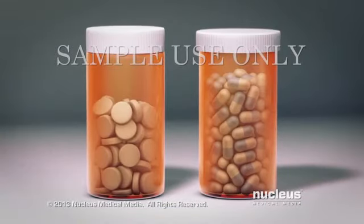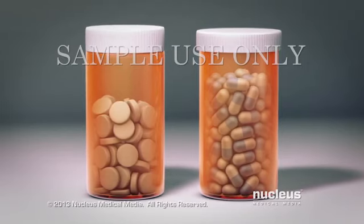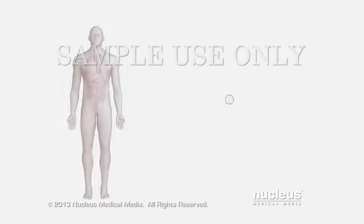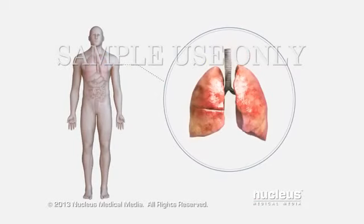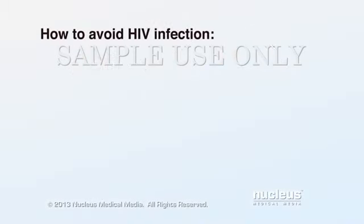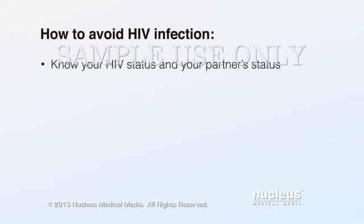Treatments for the opportunistic infections of AIDS are medications specific for each type of infection. For example, your doctor may prescribe antibiotics if you have pneumonia or tuberculosis. To avoid getting or spreading an HIV infection, know your HIV status and your partner's status by getting tested regularly.